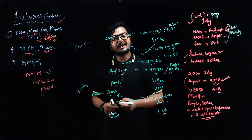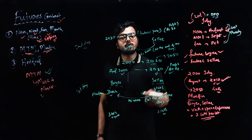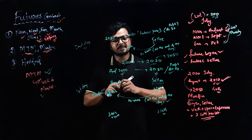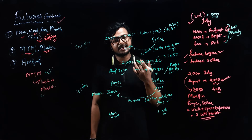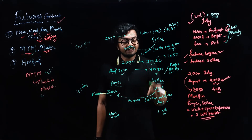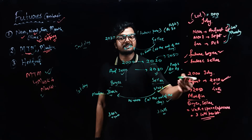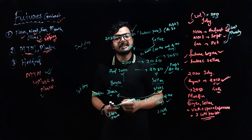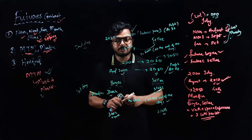Now imagine that you are going for physical settlement. If you hold your contract and the expiry has already been reached — last Thursday has finished and you still hold the contract — in this case, you have to buy the shares at the futures price, if you are holding the contract.